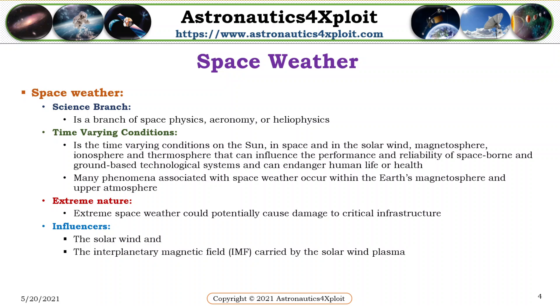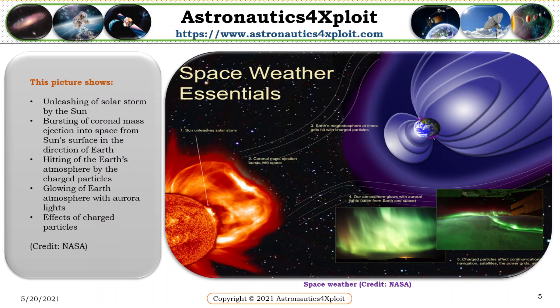Many phenomena associated with space weather occur within the Earth's magnetosphere and upper atmosphere. Extreme space weather could potentially cause damage to critical infrastructure on Earth and in space. The influences are the solar wind and the interplanetary magnetic field carried by the solar wind plasma. The picture to the right shows the unleashing of a solar storm by the sun, a coronal mass ejection bursting into space from the sun's surface in the direction of Earth, heating of the Earth's atmosphere by charged particles, aurora lights, and further effects of charged particles.